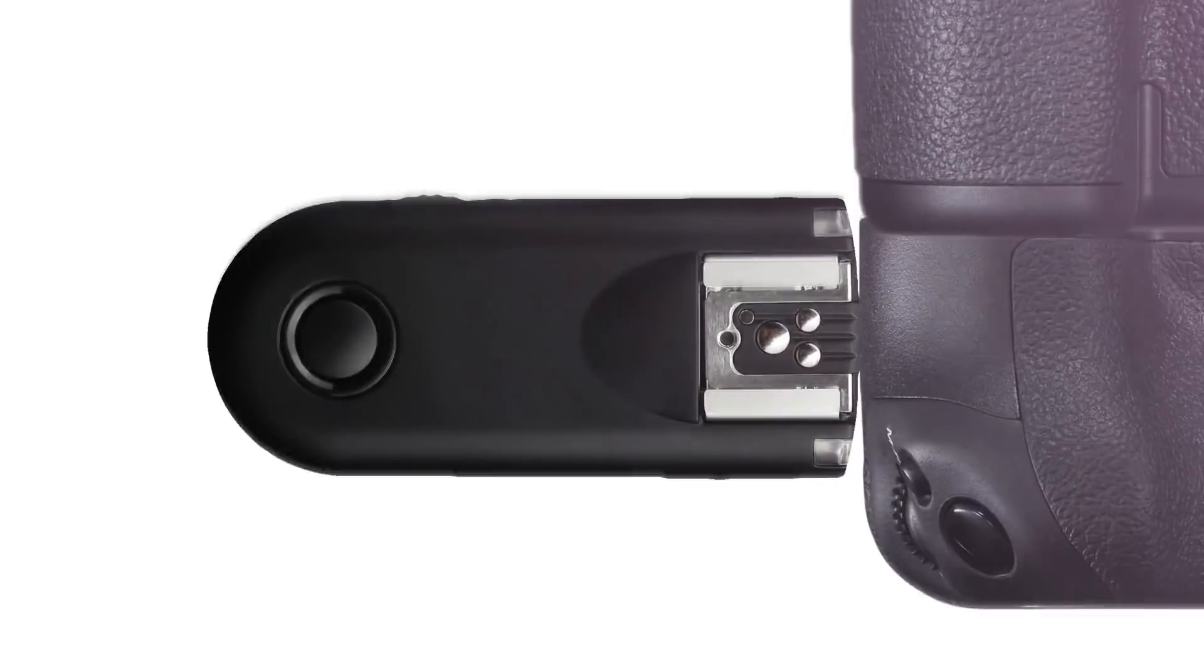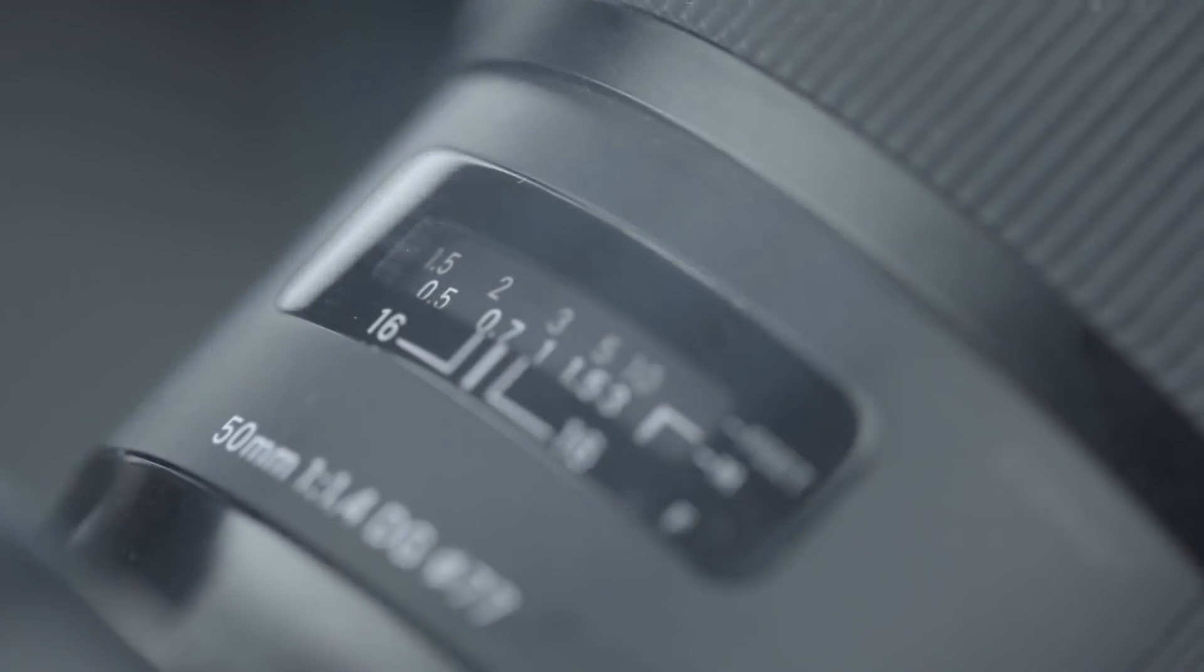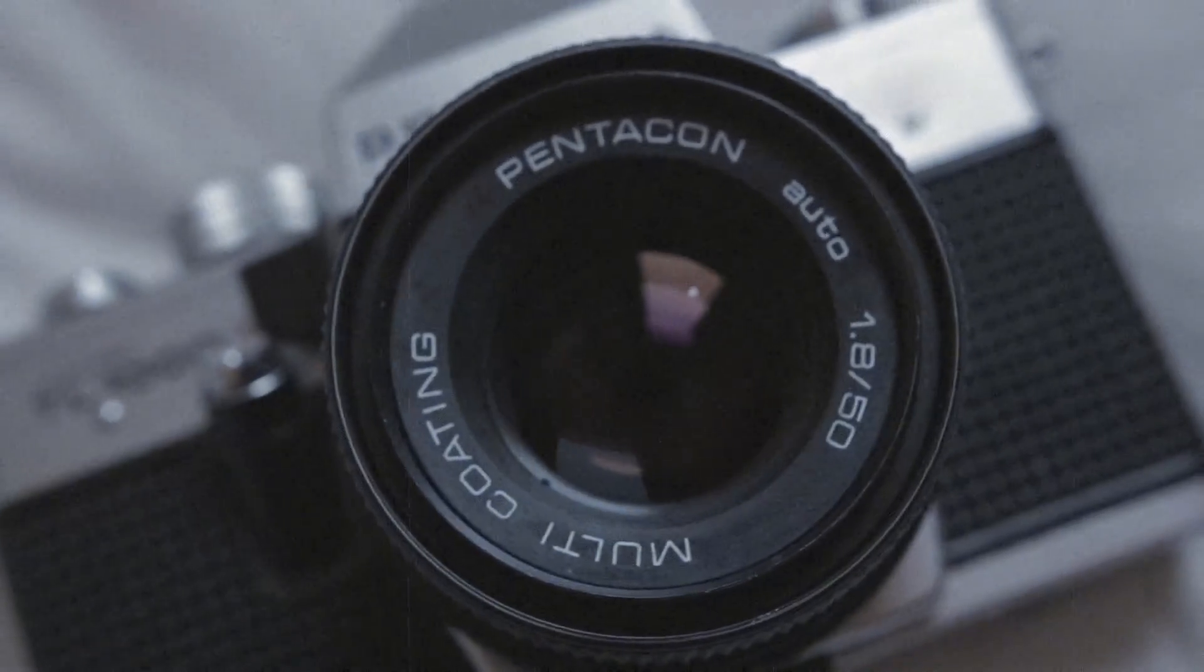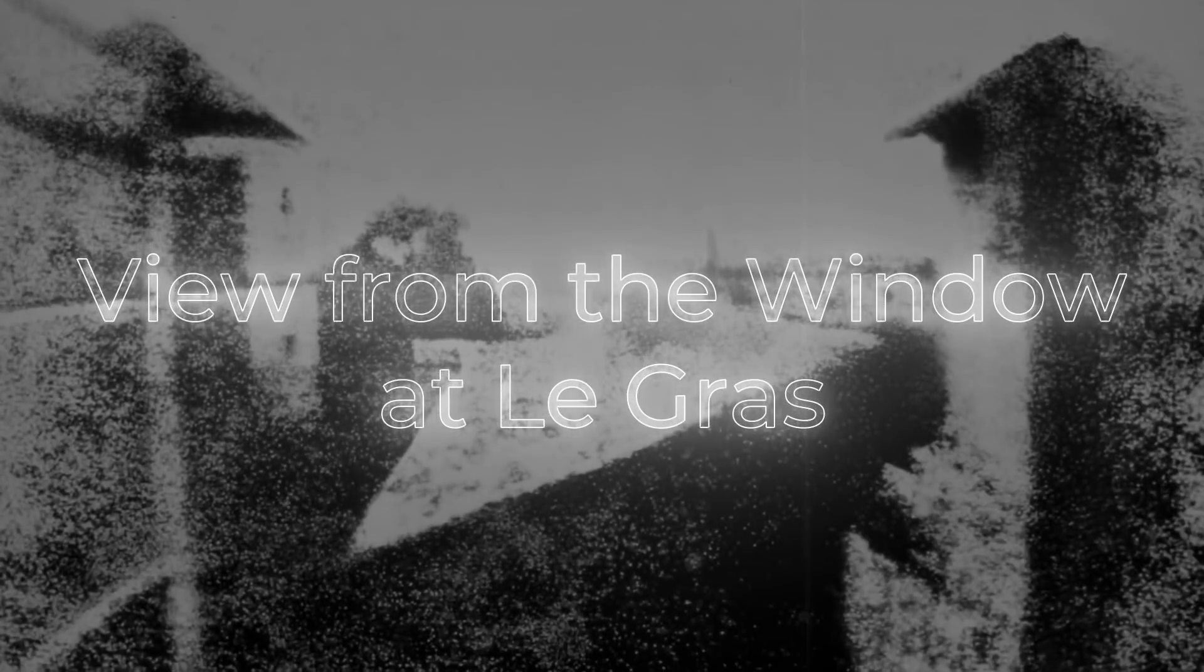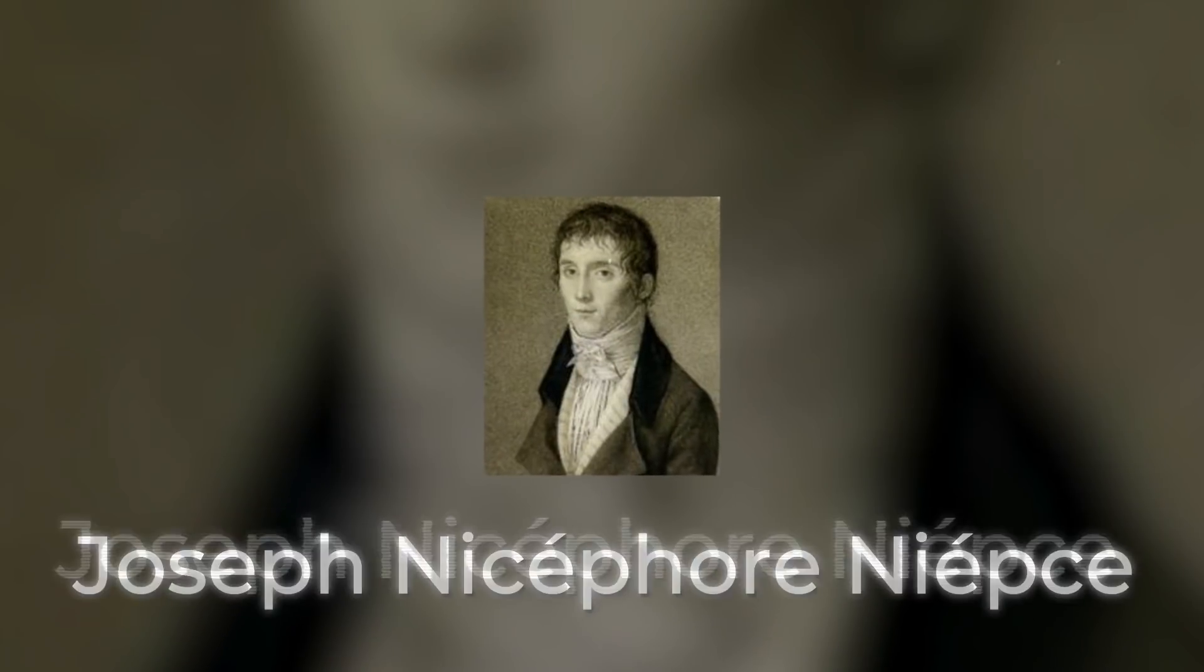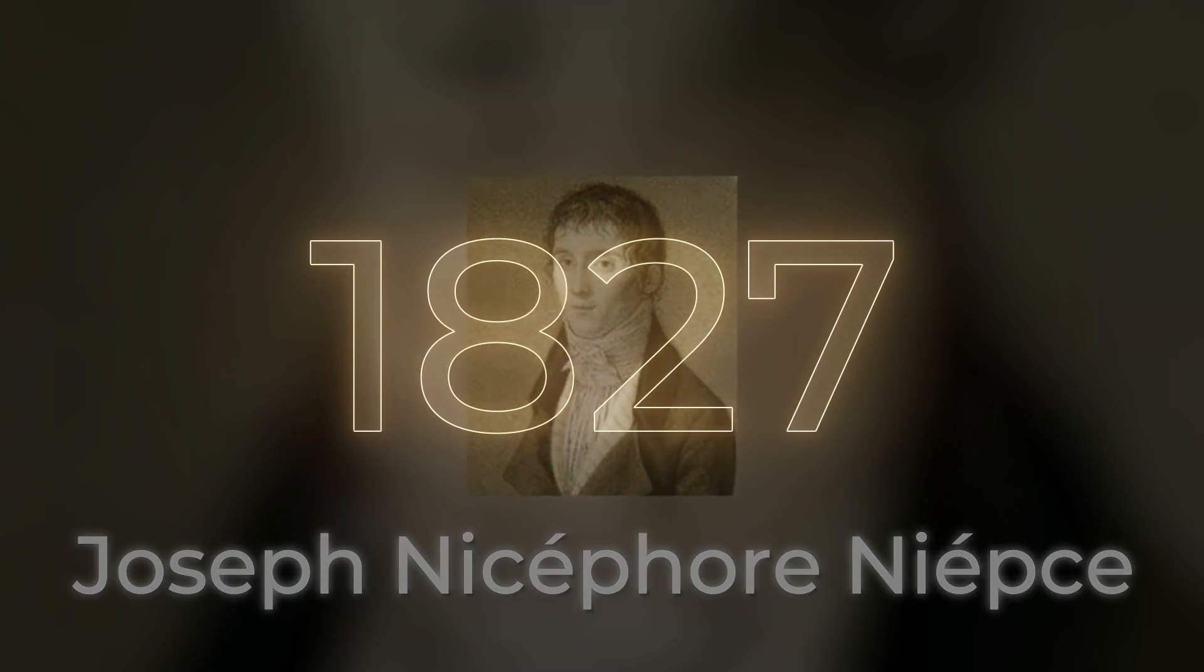The oldest photograph of nature taken and preserved to this day is a frame called View from the Window at Le Gras. The photo was captured by French inventor Joseph Nyssephore Niepce in 1827.